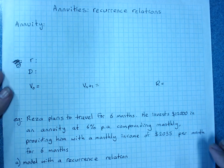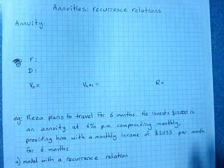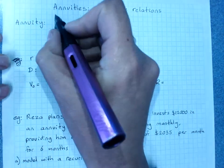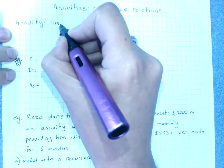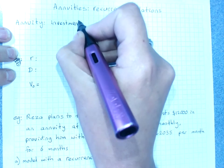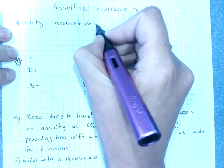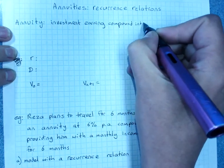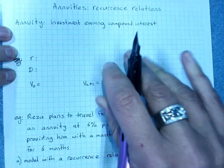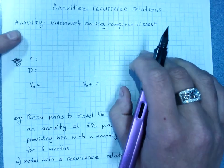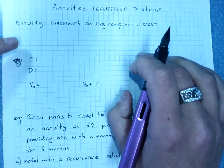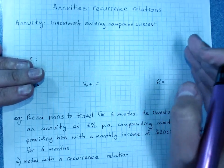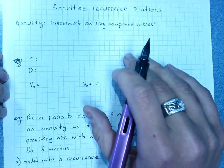Modeling annuities with recurrence relationships. An annuity is an investment that earns compound interest, but like a reducing balance loan, it's not just a principal sitting there and interest being accrued, there's also payments involved.